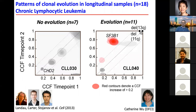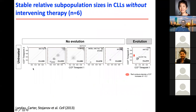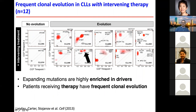Together with Kathy Wu, Dan Avilanda, Scott Carter, and Peter Stoyanov, we looked at this in CLL and saw that some cases showed no evolution between time point one and two, which could be years apart. Those with no evolution were typically untreated between time points, while treated cases clearly showed evolution, and we could identify the driver mutations causing the fitness increase of those clones over time.